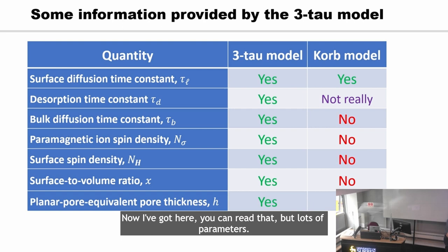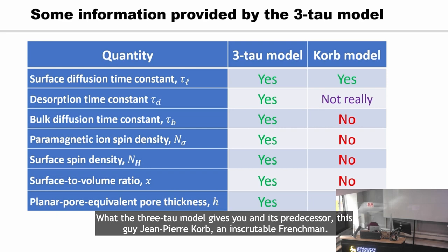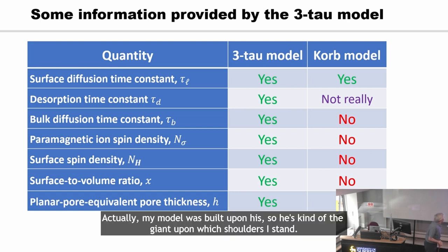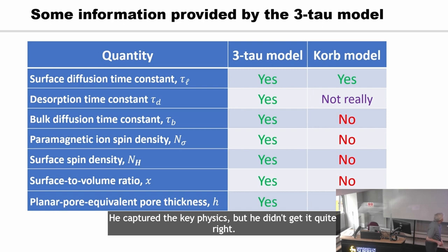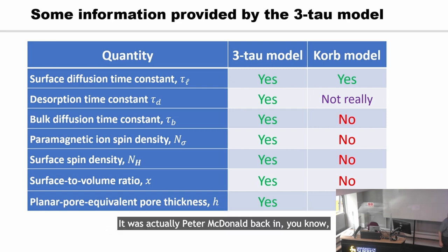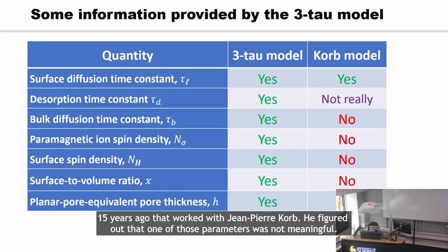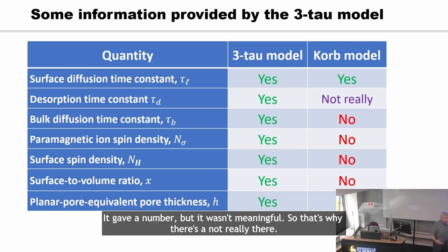Here are the parameters — what the 3-tau model gives you. Its predecessor model was by Jean-Pierre Corbe, an inscrutable Frenchman. My model was built upon his — he's kind of the giant upon whose shoulders I stand. He captured the key physics, but didn't get it quite right. It was actually Peter McDonald working with Jean-Pierre Corbe who figured out that one of those parameters was not meaningful — it gave a number, but it wasn't meaningful. That's why there's a 'not really' there in the table.